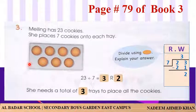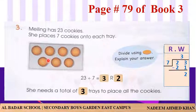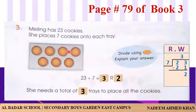Page 79، book 3، question number 3: Milling کے پاس 23 cookies ہیں، انہوں نے ہر tray پر 7 cookies رکھی ہیں۔ tray میں cookies count کریں: 7۔ total cookies 23 divided by 7۔